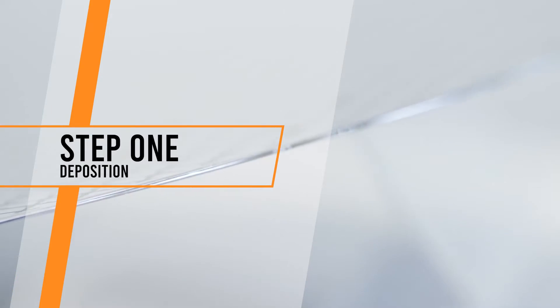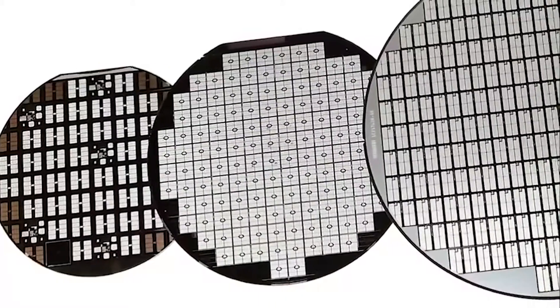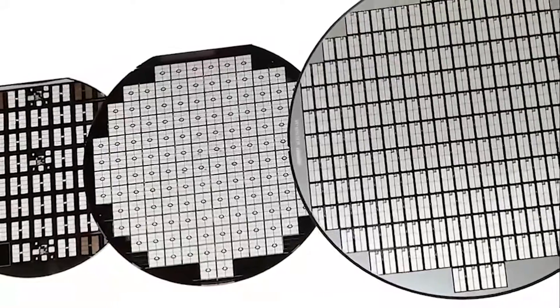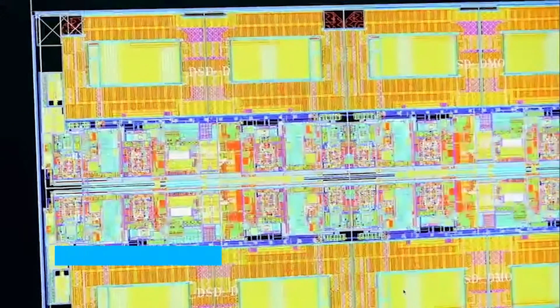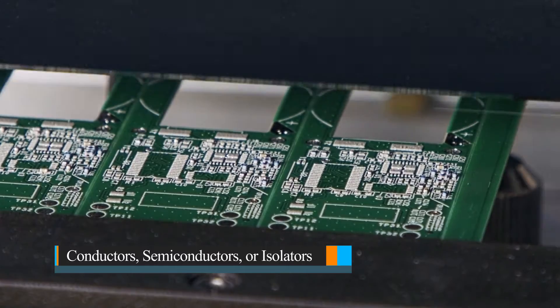Step 1. Deposition. This is the first step in making a microchip, and it typically involves depositing thin films of materials into the silicon wafer. These materials can be conductors, semiconductors, or isolators.